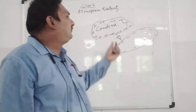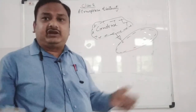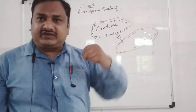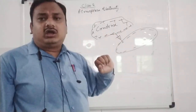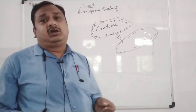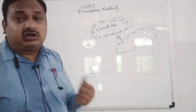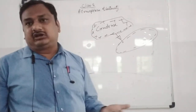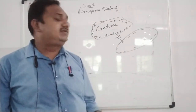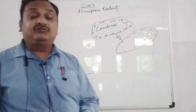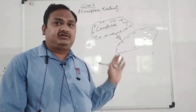Whenever this electric discharge takes place, it happens in seconds. A huge amount of charge flows in seconds, so the air gets warmed up and expands suddenly. Due to this rapid expansion of air, a louder sound is produced in our atmosphere, which we hear in the form of thunder. That is how thunder is produced whenever lightning happens.